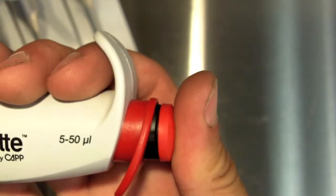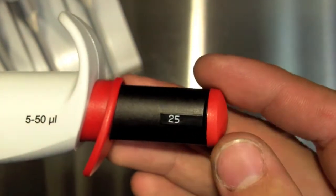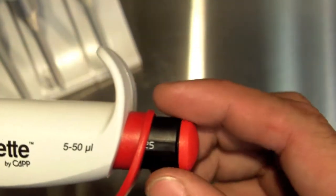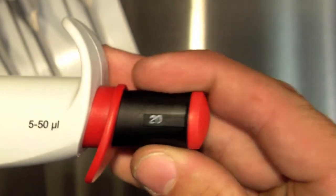Now this is a 50 microliter fixed volume pipette. I can remove the 50 microliter and put in a 25 microliter knob or a 20 microliter knob.